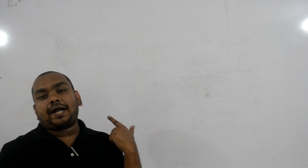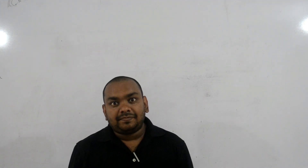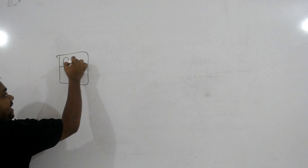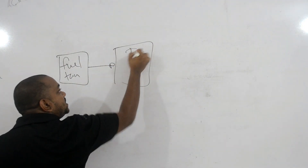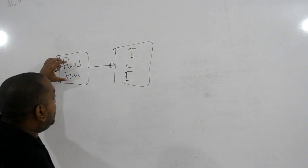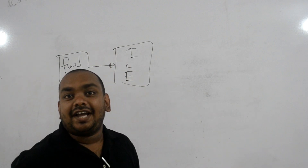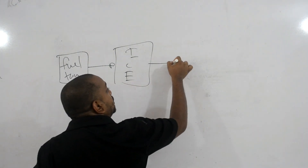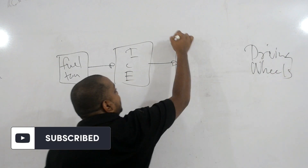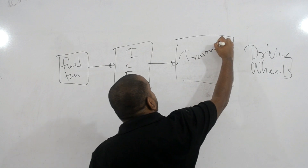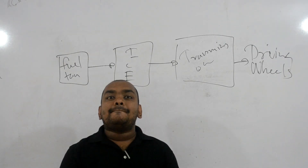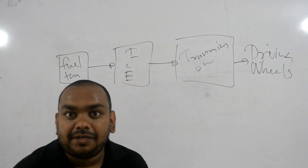In a normal vehicle propelled by an internal combustion engine, we have a fuel tank that supplies fuel to the engine. That fuel is burned, converting to heat energy, which then converts to kinetic energy. That kinetic energy goes to the driving wheels through a transmission. This is the basic power trail of a normal vehicle propelled by an internal combustion engine.